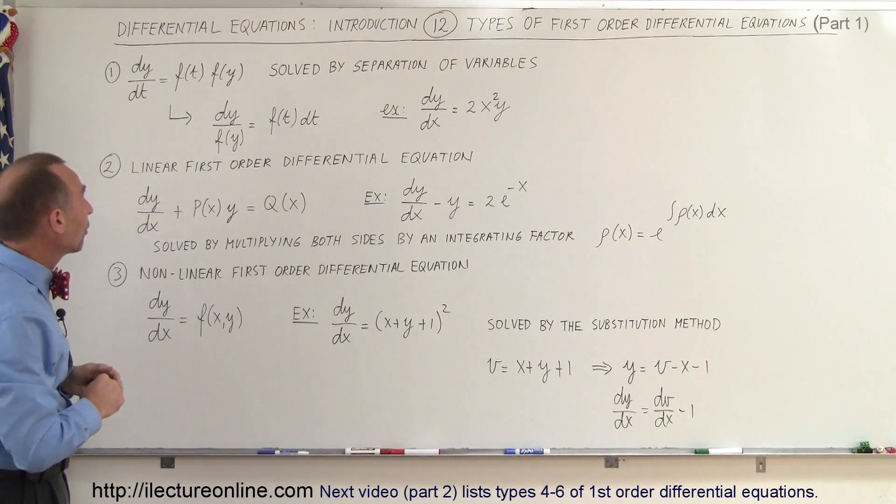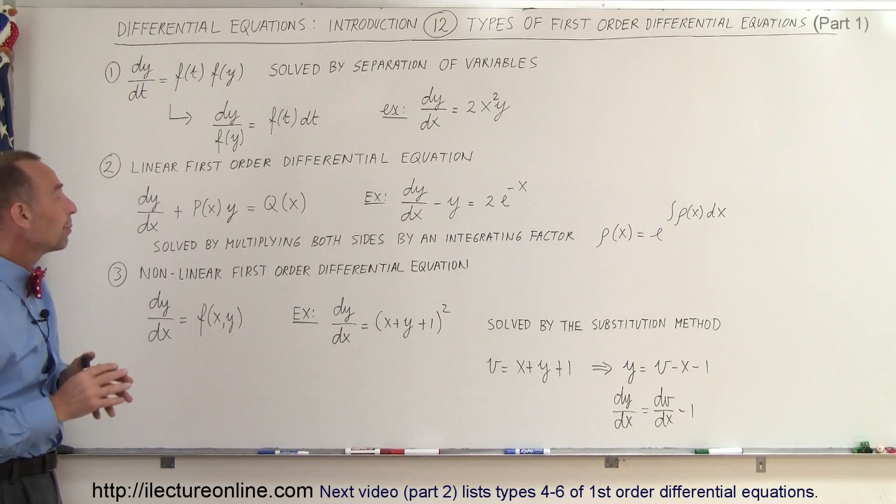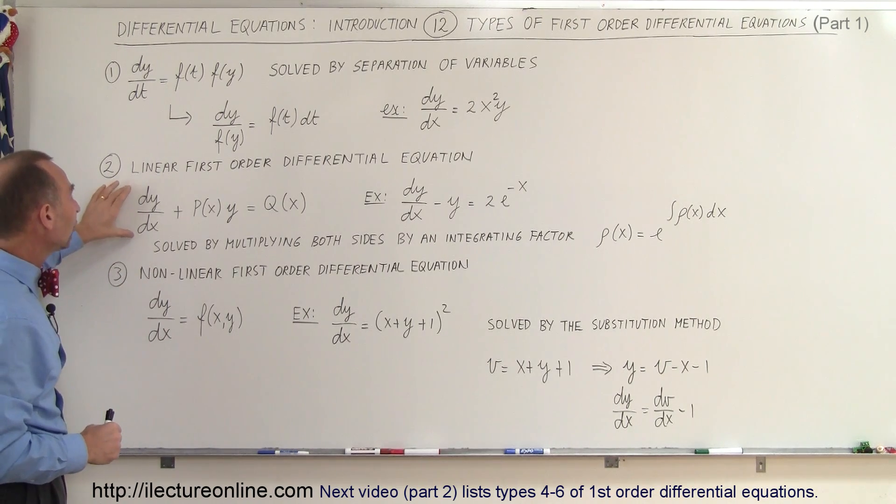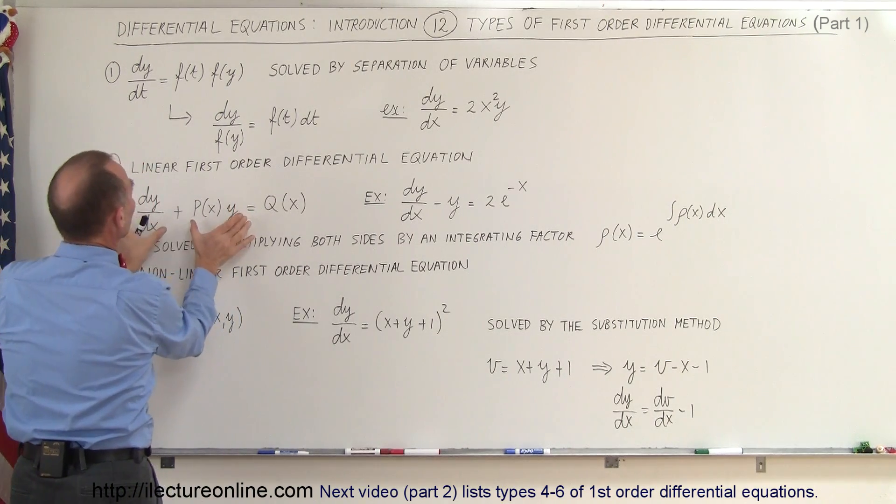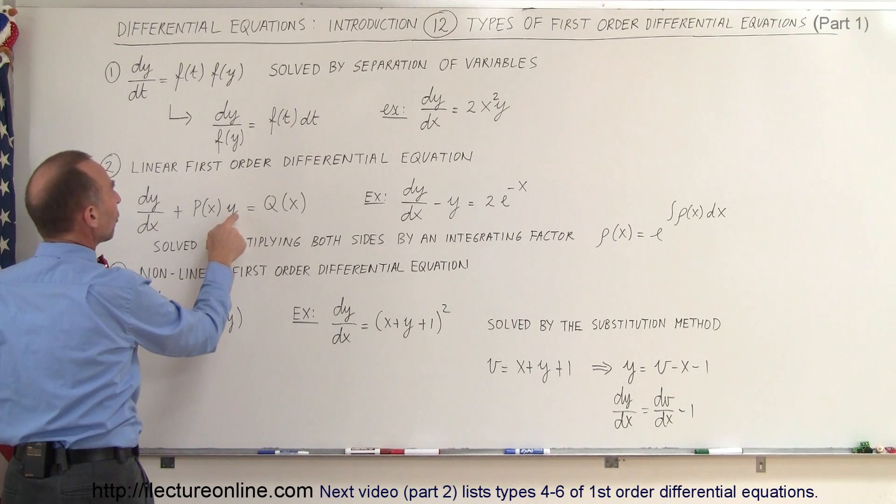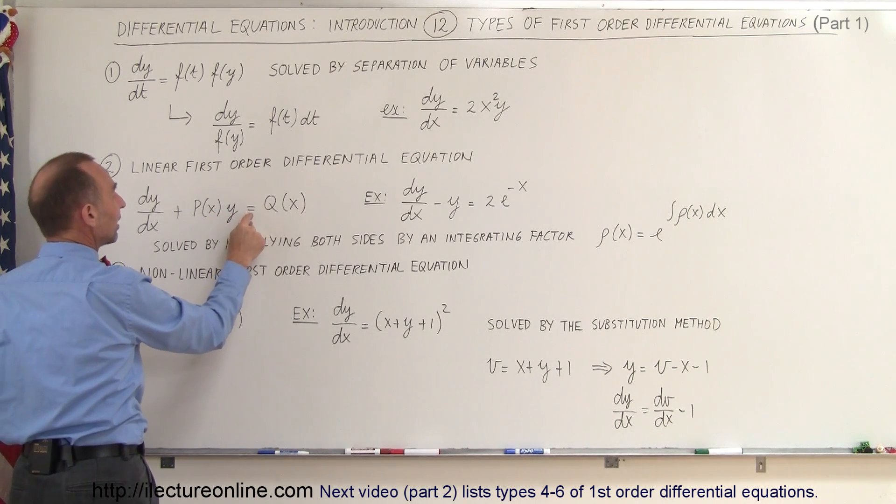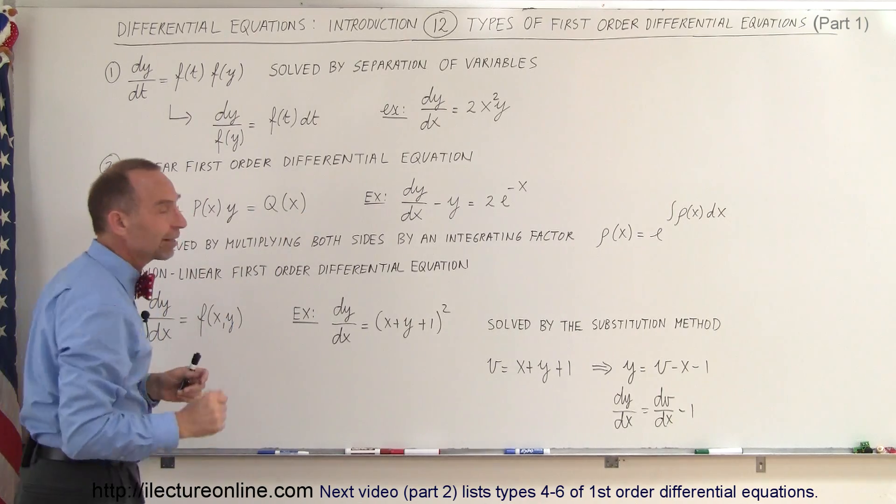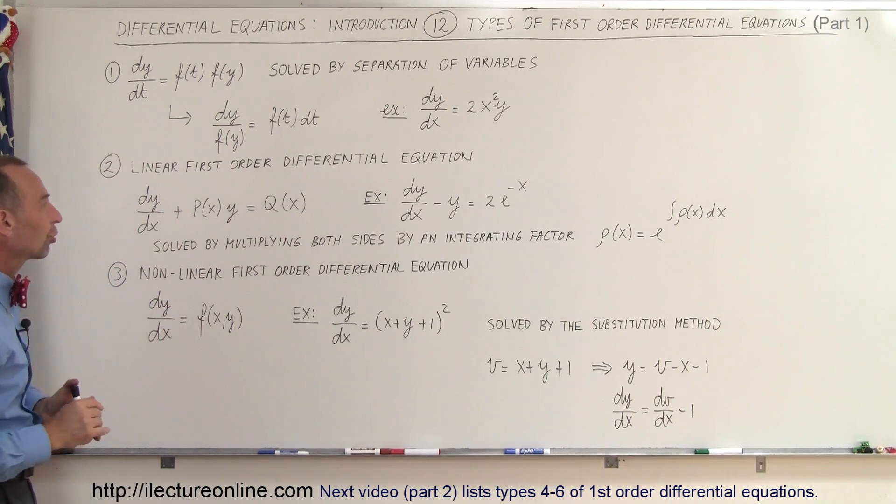A second type that you could run into is what we call the linear first order differential equation. This is the general form of the linear first order differential equation. We have a dy/dx and we have a y in the two terms on the left side of the equation. Then the y could be multiplied times some function of x and that we can then set that equal to some function of x on the right side of the equation. So it's a general form of a linear first order differential equation.